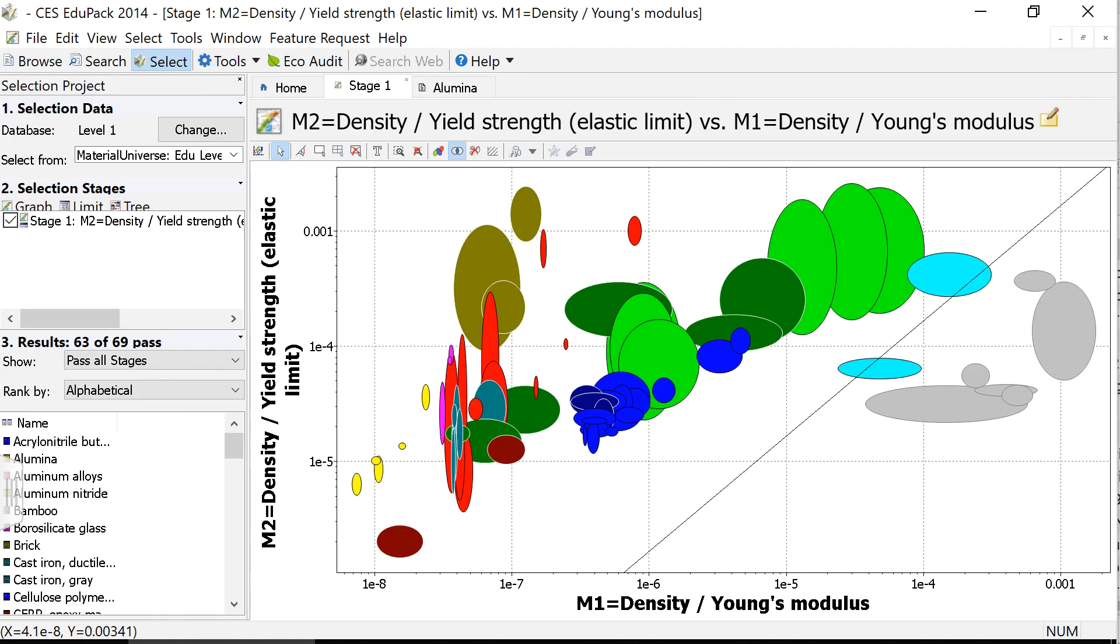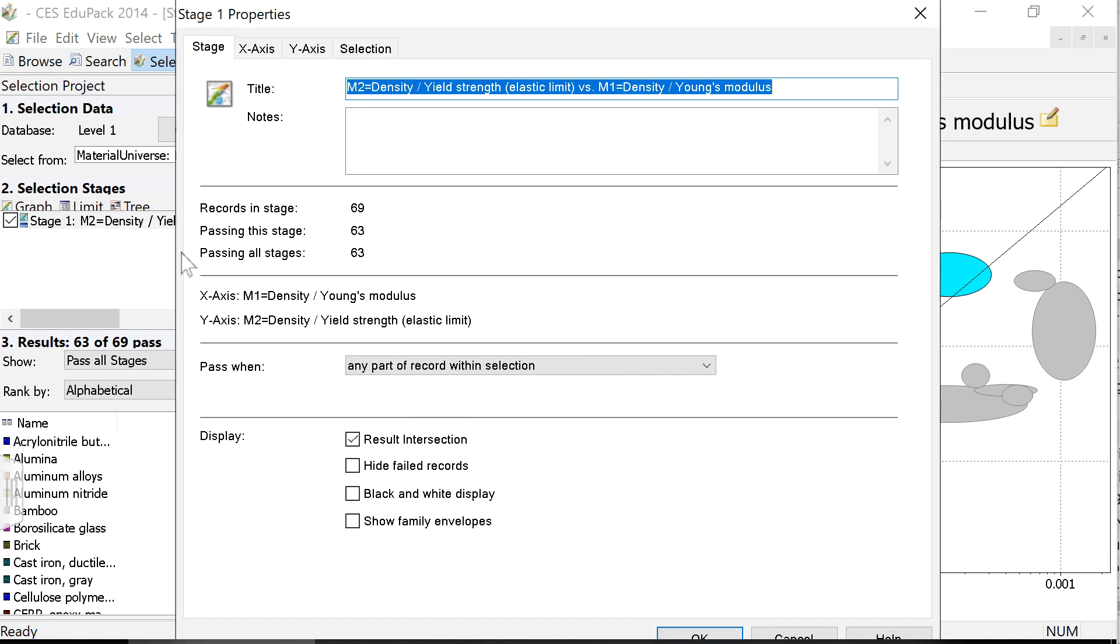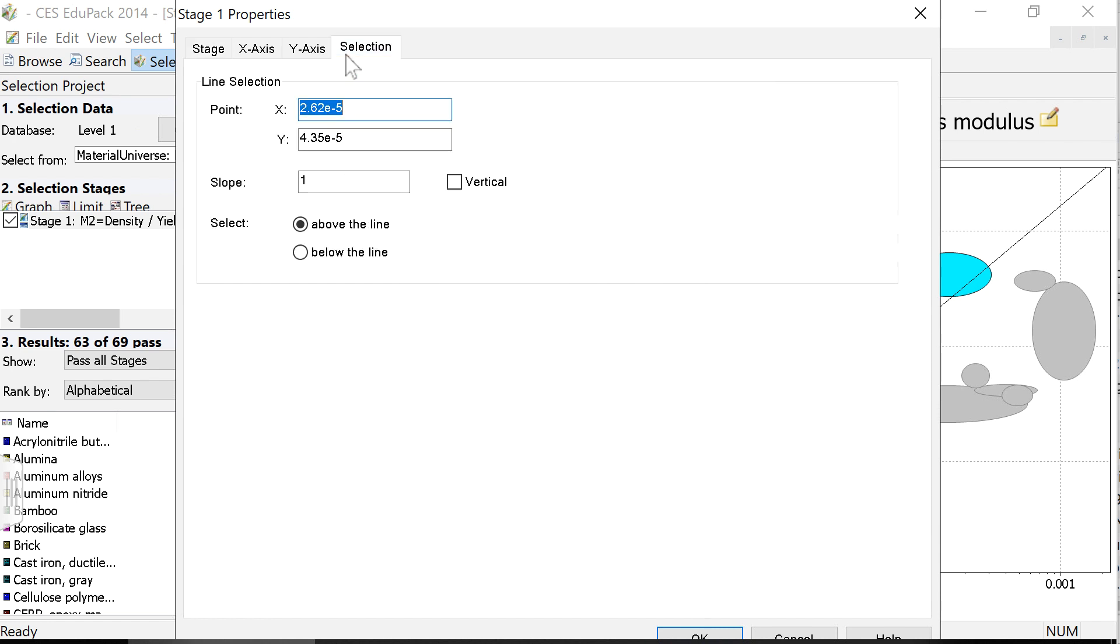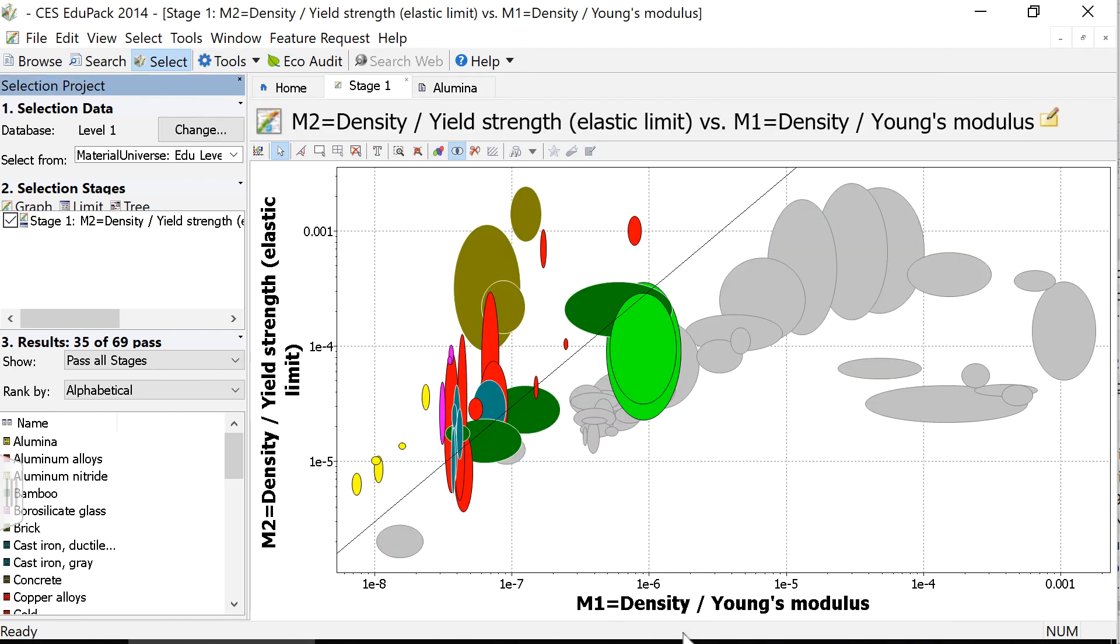To set the location of the line in CES EduPack, now we go over, we right click on the Stage button, and I select Edit Stage. Now I can go to Selection, where I can specifically enter those x and the y values that we just specified. So we set x equals to 1 and y equals to 300. And I select OK. And now this draws our line in.